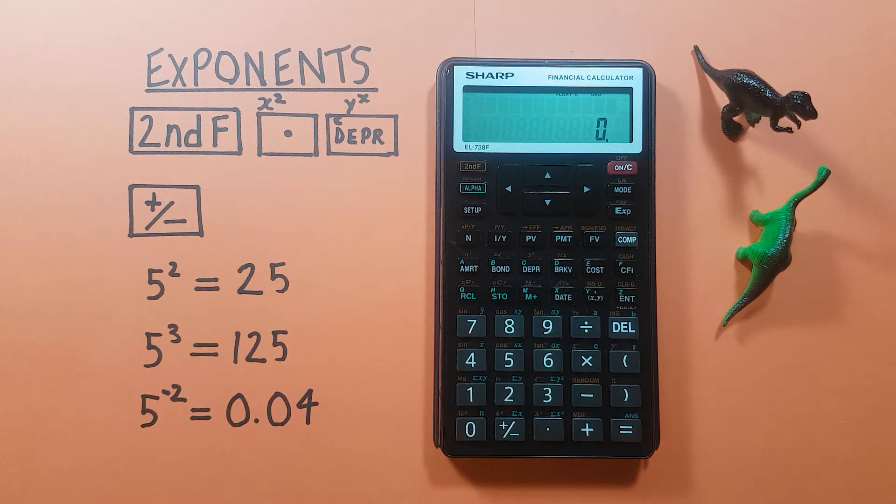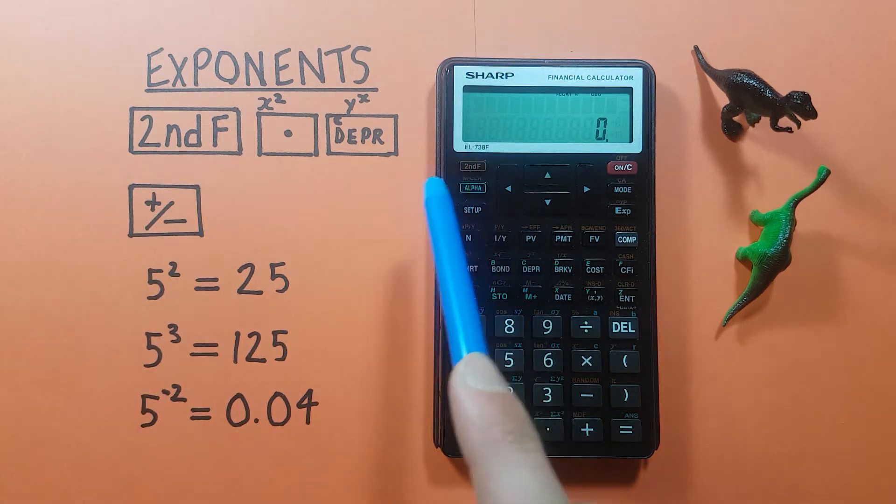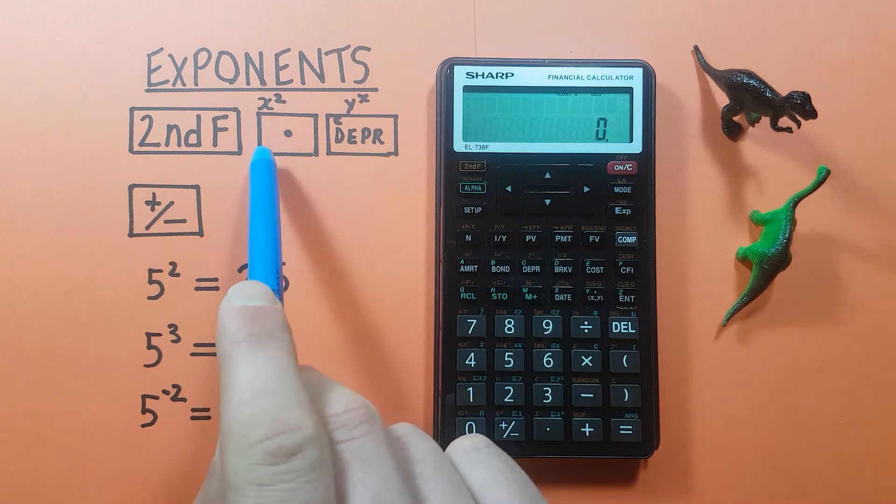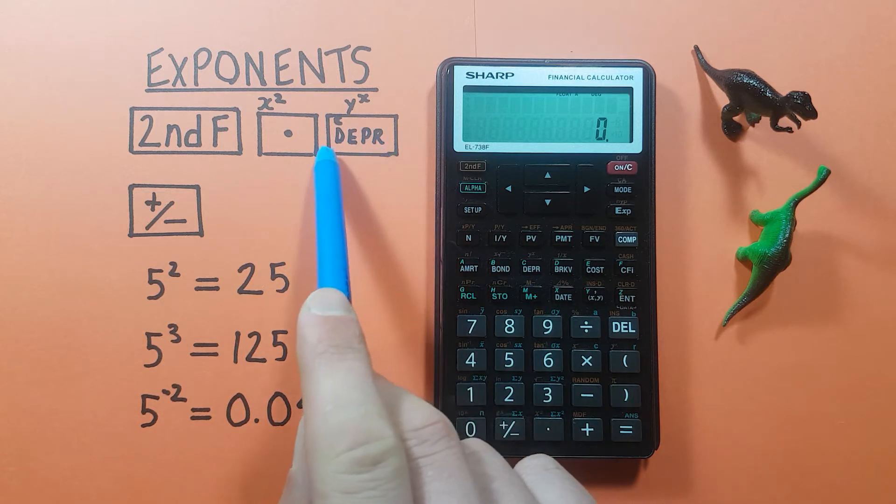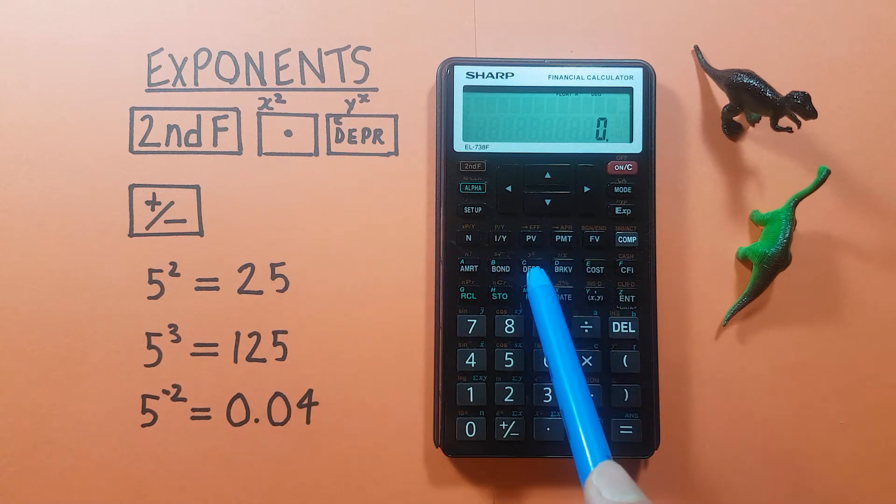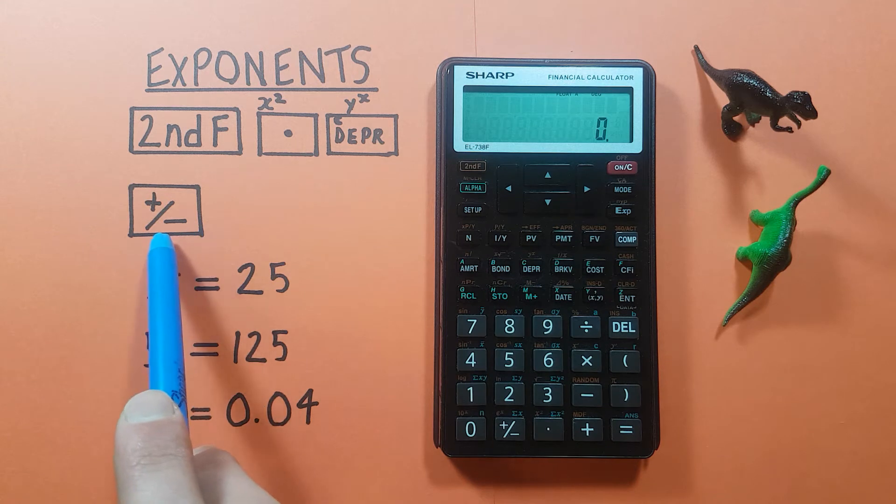To do this we'll need to use the second function key that looks like this located here, the decimal key with the second function of x squared that looks like this located here, the DEPR key that looks like this located here with the green c on it and it has a second function of y to the power of x, as well as the positive negative key that looks like this located down here.